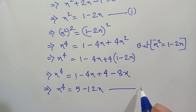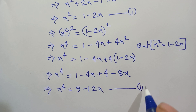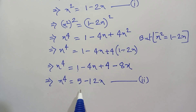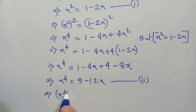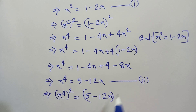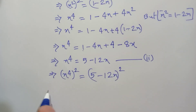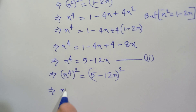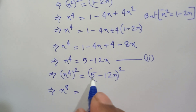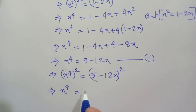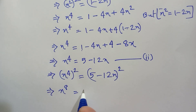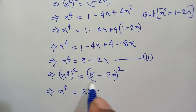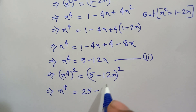Now in this equation we square both sides again: (x⁴)² = (5 - 12x)², which gives x⁸ = 25 - 2·5·12x + (12x)², so x⁸ = 25 - 120x + 144x².